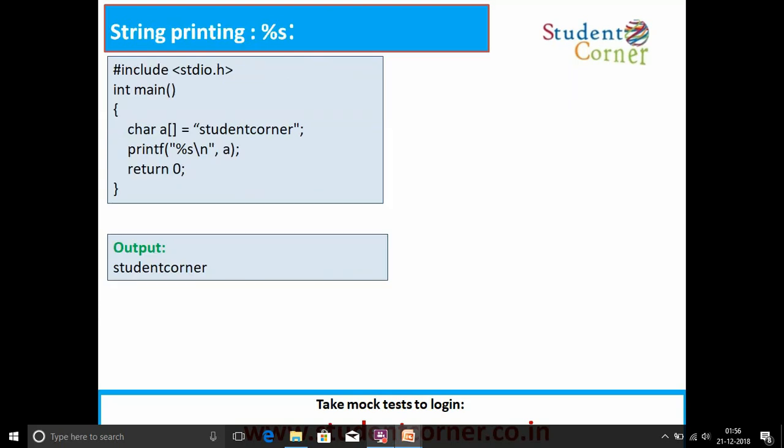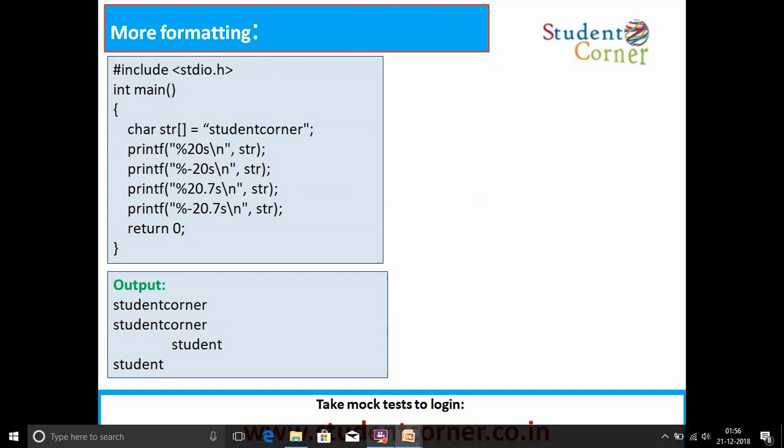String representation: %s. Here more formatting: 20s, minus 20s, 20.7s, minus 20.7. This 20 indicates it prints 20 characters. And 20.7 means leave 7 spaces after 20 characters, if you need to print.